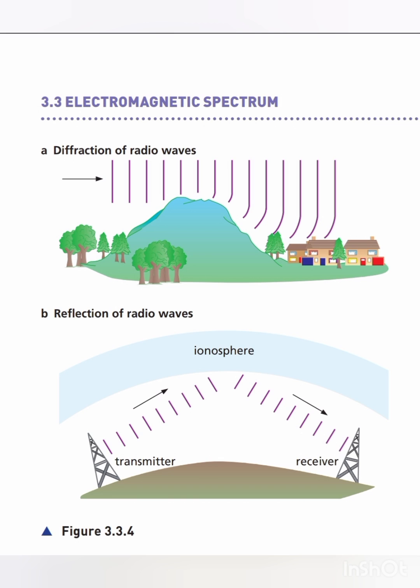Long, medium, and short waves with wavelengths of 2 kilometers to 10 meters diffract around obstacles, so they can be received even when hills are in the way, as shown in figure 3.3.4a. They are also reflected by layers of electrically charged particles in the upper atmosphere — the ionosphere — which makes long-distance radio reception possible.